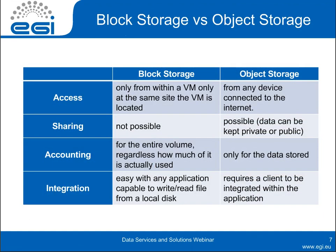This table shows the main differences between them. For access: in block storage, you can only access one volume from a VM and only within the same site the VM is located, so it's quite local. In object storage, you can access from any device connected to the internet. Block storage cannot be shared — you connect it to one VM and that's the only VM that can access it directly — while object storage can be shared without problems, and you can define if your data is private or public. For accounting, in block storage you get accounted for the entire volume: if you allocate one terabyte, you will get accounted for one terabyte regardless of whether you stored just one byte or the full terabyte.